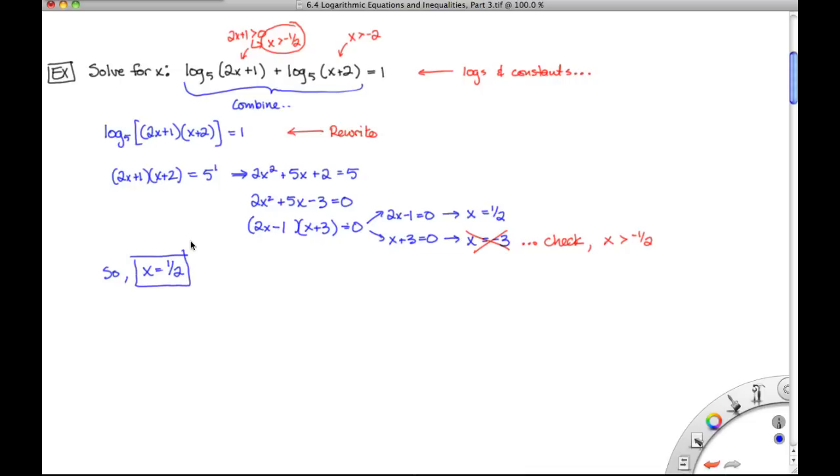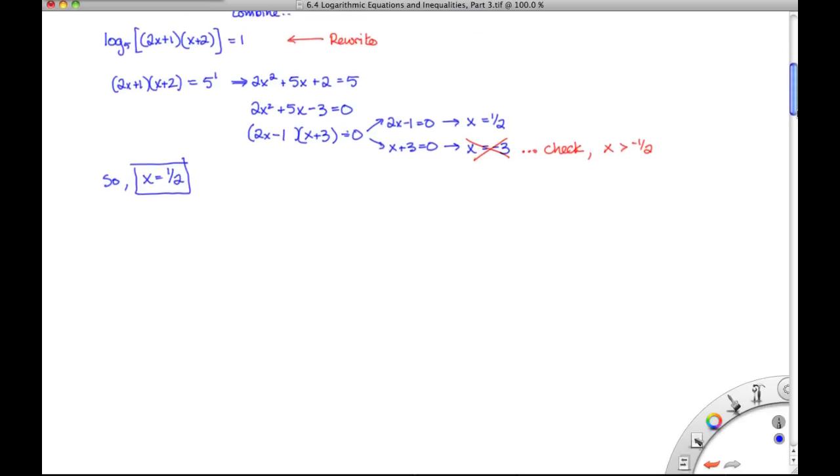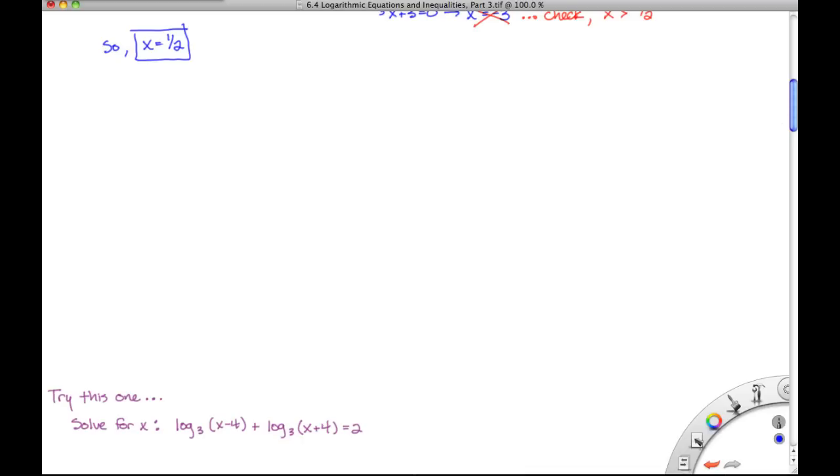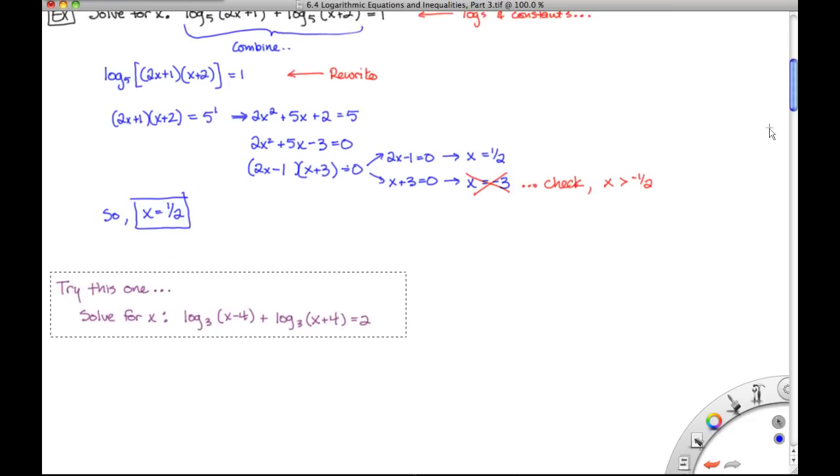So both of those examples, two different ones, but they both required us to use our properties of logs to really get us on the right path to get them started. What I would like you all to try for next time is go ahead and try this one. Let me bring this up. So for the next time, this is very similar to the last one we just did. We've got the log base 3 of x minus 4 plus the log base 3 of x plus 4 is equal to positive 2. So go ahead and give that one a try, and we will have the answer in the next video, which we will begin to tackle the question of how do we solve logarithmic inequalities. Thank you.